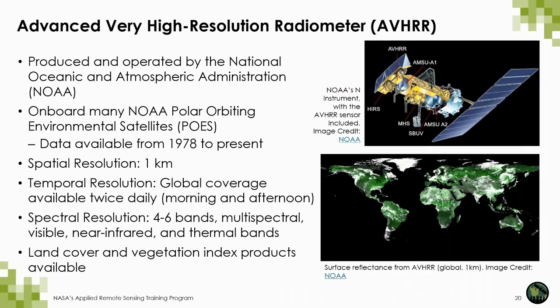The Advanced Very High Resolution Radiometer, or AVHRR, can also be used for phenology. It's operated by NOAA, with multiple instruments onboard the POES satellites. The 'Very High Resolution' is a bit of a misnomer because the spatial resolution is actually fairly coarse at one kilometer; the name refers to its temporal resolution, with a global revisit time of twice a day. AVHRR has six spectral bands including near-infrared, mid-infrared, and thermal bands. This sensor is really the backbone for the creation of the global land cover product provided by NOAA, which can differentiate between different types of grass, shrubs, cropland, and water.